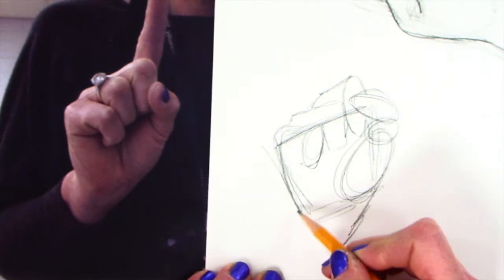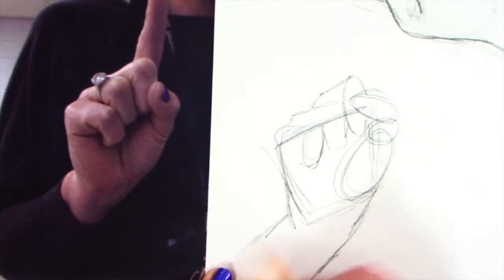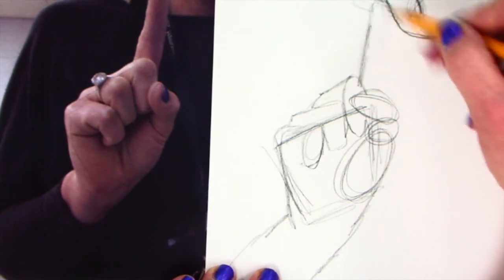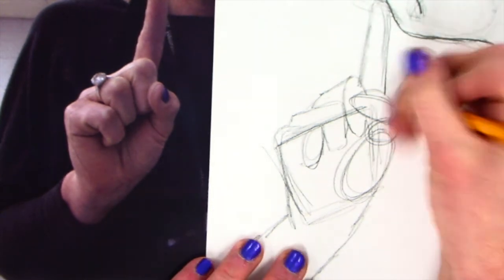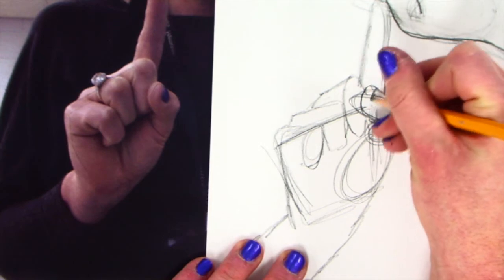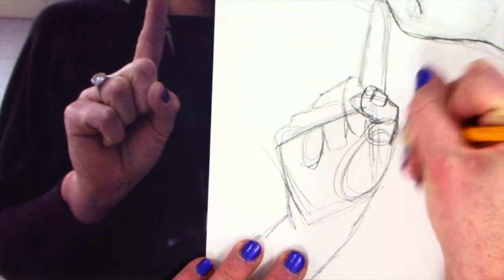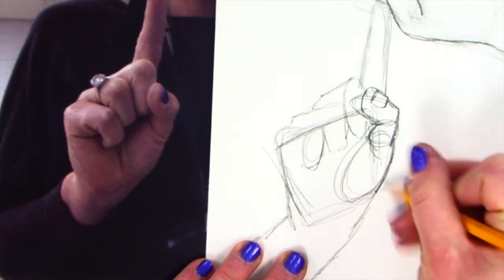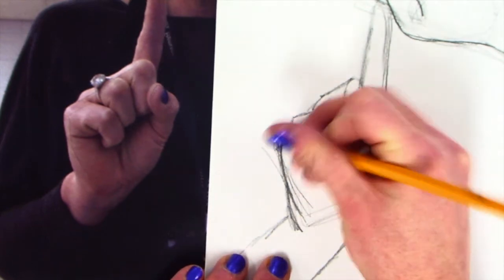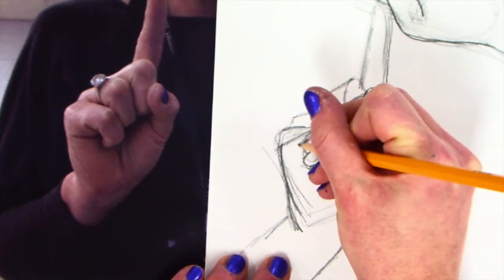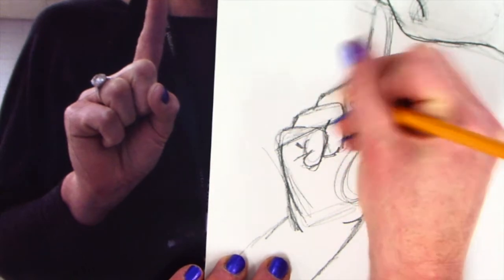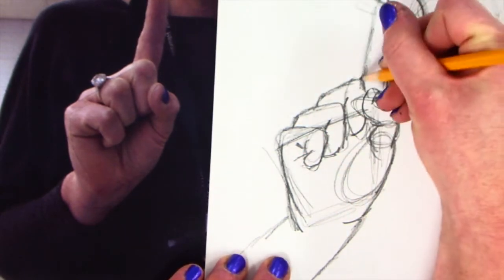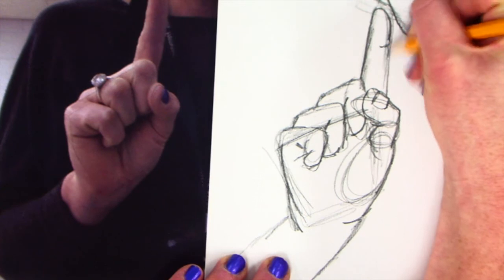Then I move into my outlines. And then I'll go into my contours and begin erasing some of those guidelines.